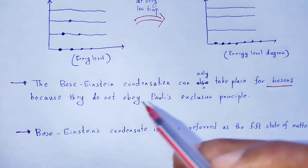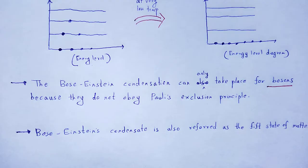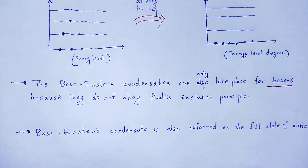Bosons undergo Bose-Einstein condensation instead of fermions. In case of fermions, they obey Pauli's exclusion principle and their intrinsic spin is an odd integral multiple — that is, 1/2, 3/2, 5/2, and so on — and fermions obey Fermi-Dirac statistics. Therefore, only bosons undergo Bose-Einstein condensation.